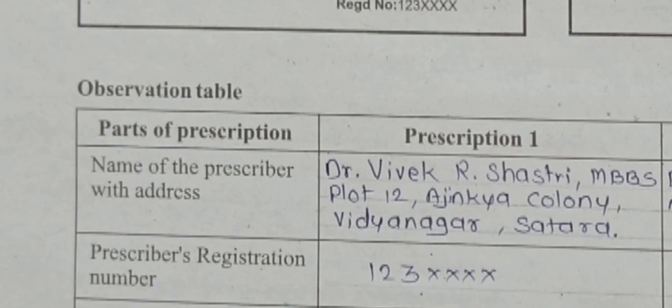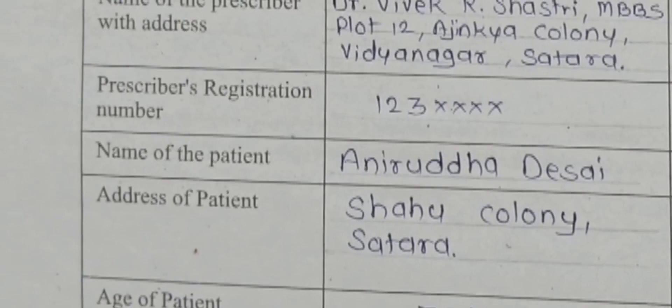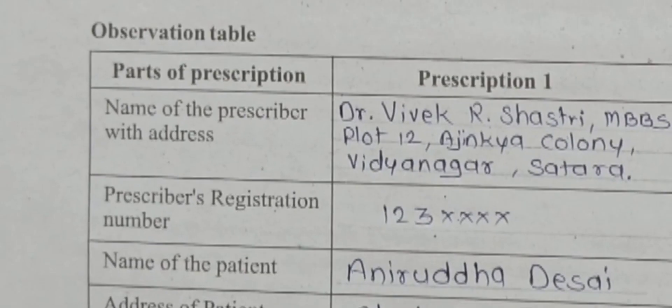Name of the patient: here it is Aniruddh Desai — the full name should be written. Then the address of the patient: only the area is mentioned, contact number is not mentioned. That detail should be there on the prescription. Age and sex of the patient are given.